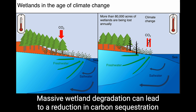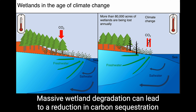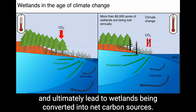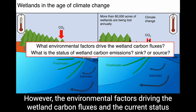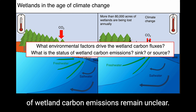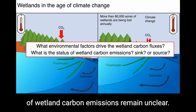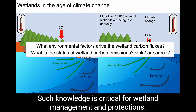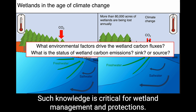Massive wetland degradation can lead to a reduction in carbon sequestration and ultimately lead to wetlands being converted into net carbon sources. However, the environmental factors driving the wetland carbon fluxes and the current status of wetland carbon emissions remain unclear. Such knowledge is critical for wetland management and protection.